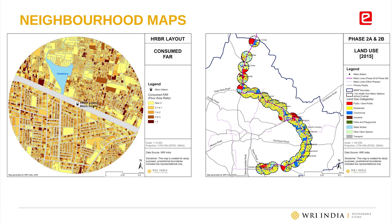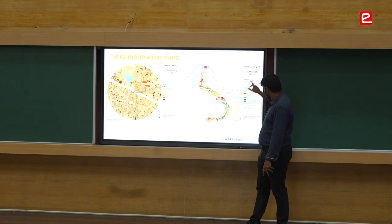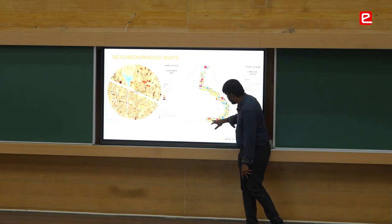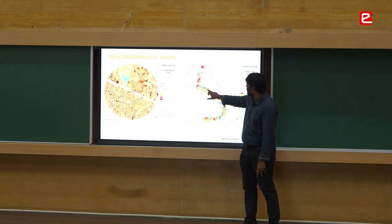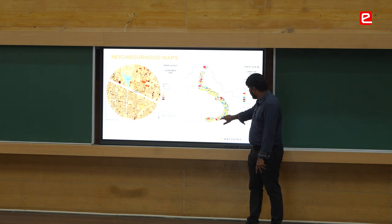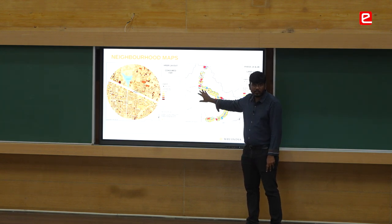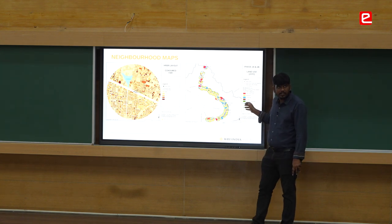What you are seeing is Bangalore Municipal Corporation and a new metro line that was planned. The map was prepared with data from 2015 — this is 2020. This was the proposed metro line towards the airport, and these are the circles around each metro station. Color corresponds to what type of use it is — residential, commercial, etc.